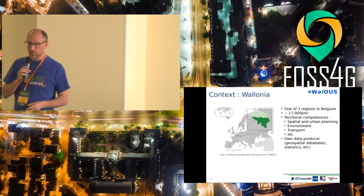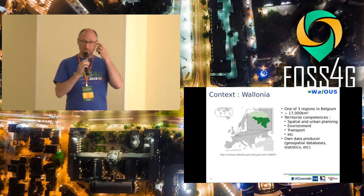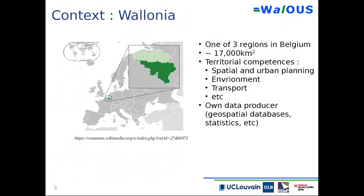To show you where we are talking about: this is Wallonia, the southern part of Belgium, about 17,000 square kilometers. The political system in Belgium is complex, but these regions have quite extensive competencies — the entire spatial planning, economic development, urban planning, environment, and transport are all regional competencies. For a large extent of the data it uses, the region is its own data producer, and most data is nowadays produced at the regional level rather than the national level.